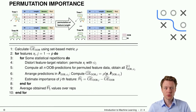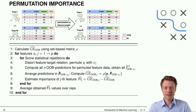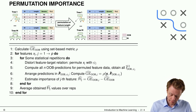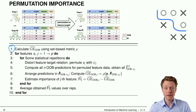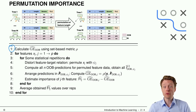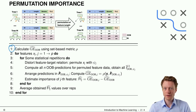Here we have the pseudocode and a helpful visualization. The very first thing you do is calculate the OOB generalization error using some set-based metric on the original data. So before permuting anything, you take your data as-is and estimate the generalization error.